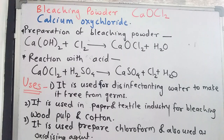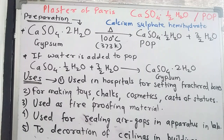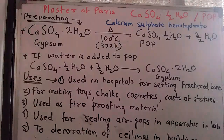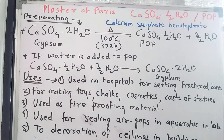Chemically, bleaching powder is calcium oxychloride with formula CaOCl2. The next salt is plaster of Paris, commonly called POP. Its formula is CaSO4·½H2O — CaSO4 for calcium sulfate and half H2O for hemihydrate. The full chemical name is calcium sulfate hemihydrate. We have two reactions for POP: preparation and reaction with water.